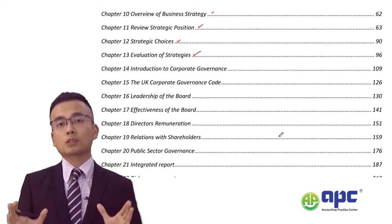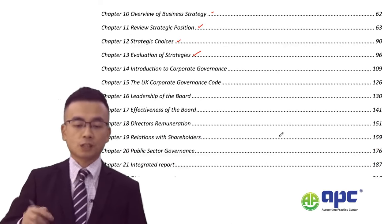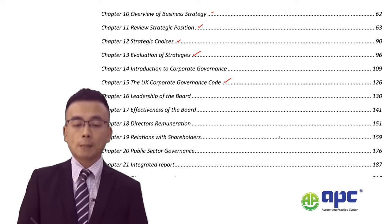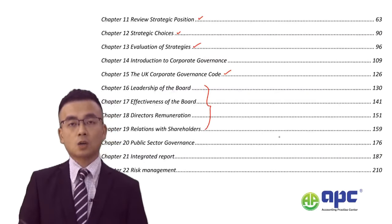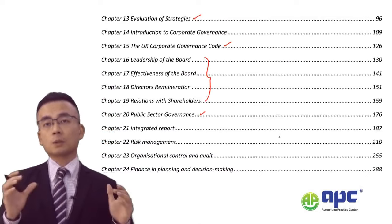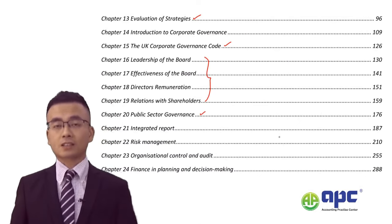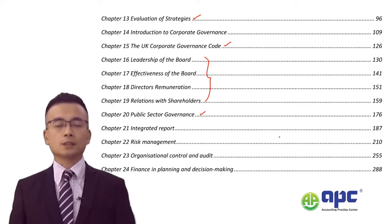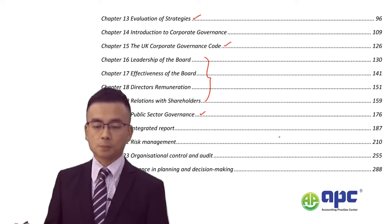From chapter 14 onwards, we'll be recapping corporate governance by introducing the UK Corporate Governance Code, detailing its five sections, and touching on public sector governance — how we manage performance in organisations such as government and state-owned companies.